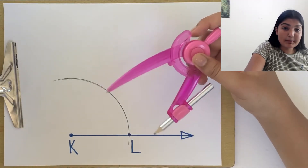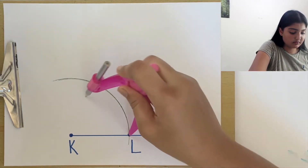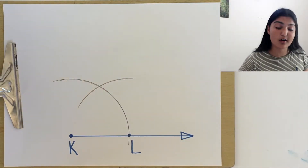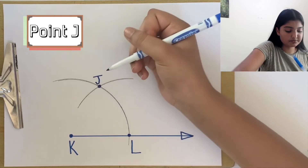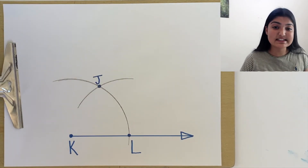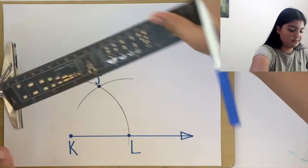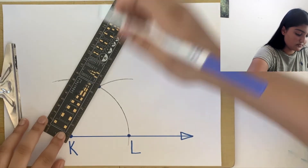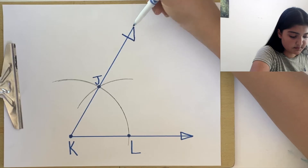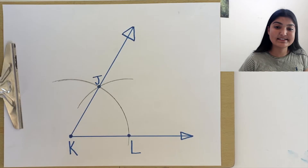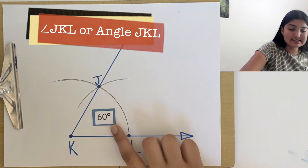Again, taking our compass, remember to keep it at the same measurement. Placing one leg on point L, make another arc. These two arcs also intersect at a point. Let's label it as J. Finally, to construct our 60 degree angle, we can make a ray that goes from K to J and extends. This gives us angle J, K, L, which measures 60 degrees.